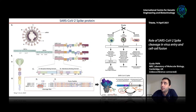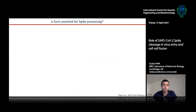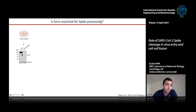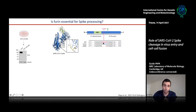Most studies used chemical inhibition or siRNA depletion, but we questioned whether furin was truly essential. Instead, we used two different approaches: first, a CRISPR-Cas9-derived furin-knockout cell line; and second, a biochemical approach where we mutated the multi-basic site — replacing all arginines and basic amino acids with glycines and serines (GSAS mutant), or completely deleting the multi-basic site leaving just one arginine to resemble what occurs in SARS-CoV-1.